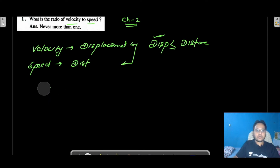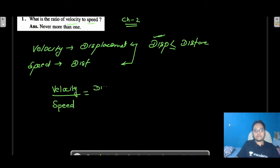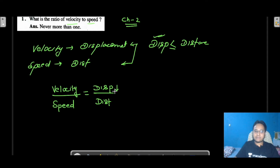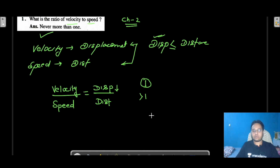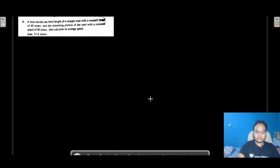Mathematically, if you look at velocity upon speed: velocity depends on displacement (numerator) and speed depends on distance (denominator). Displacement is always less than or equal to distance — हमेशा distance से कम होगा। So if the numerator is smaller and the denominator is larger, the ratio will always be less than 1. Therefore the answer is never more than 1. That completes Question Number 1.